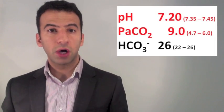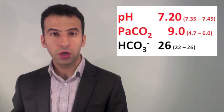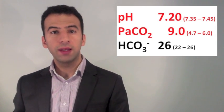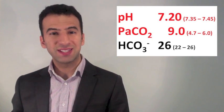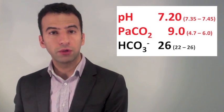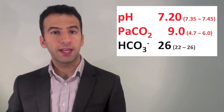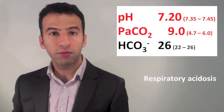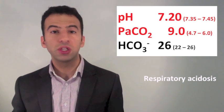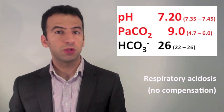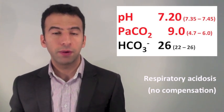In this example, the pH is low — acidemia. In Step 2, the CO2 is high, which is acidifying. Since both are moving in the same direction, the problem is respiratory, and the pH is low, so this is a respiratory acidosis. In Step 3, the bicarbonate is normal, so there's no compensation. So this is an uncompensated respiratory acidosis.